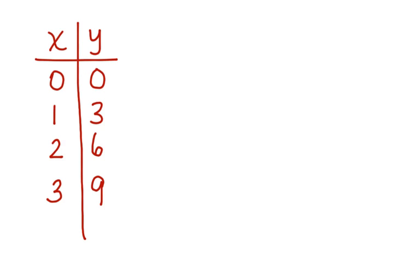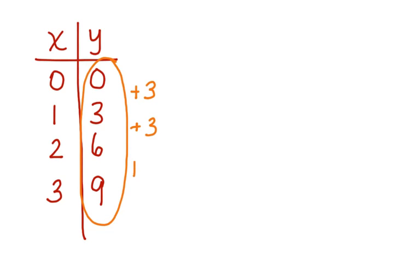Now let's look at a table and determine whether it's linear, exponential, or quadratic. Here's our table of values. We're going to examine the y values. From 0 to 3 is an addition of 3, 3 to 6 is an addition of 3, and 6 to 9 is an addition of 3. Because these are all being added the same way with the same value, this is a linear model.